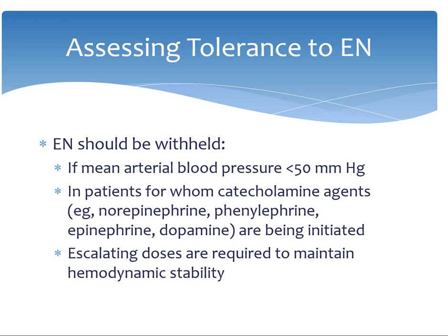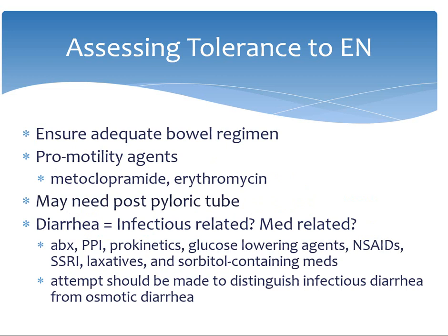Tolerance to enteral nutrition should be assessed by ensuring adequate stooling, assessing for abdominal distension, nausea or vomiting, and taking appropriate action — whether that be increasing bowel regimen, adding promotility agents, and possibly advancing an NG tube post-pylorically in the case of severe delayed gastric emptying. If the patient is experiencing diarrhea, the service should determine if it is infectious related versus medication related. Antibiotics, PPIs, prokinetics, NSAIDs, laxatives, and sorbitol-containing medications can all lead to diarrhea, and attempts should be made to distinguish whether it's infectious diarrhea versus osmotic diarrhea. If it is osmotic diarrhea, I as the dietitian can adjust the tube feeding formula.